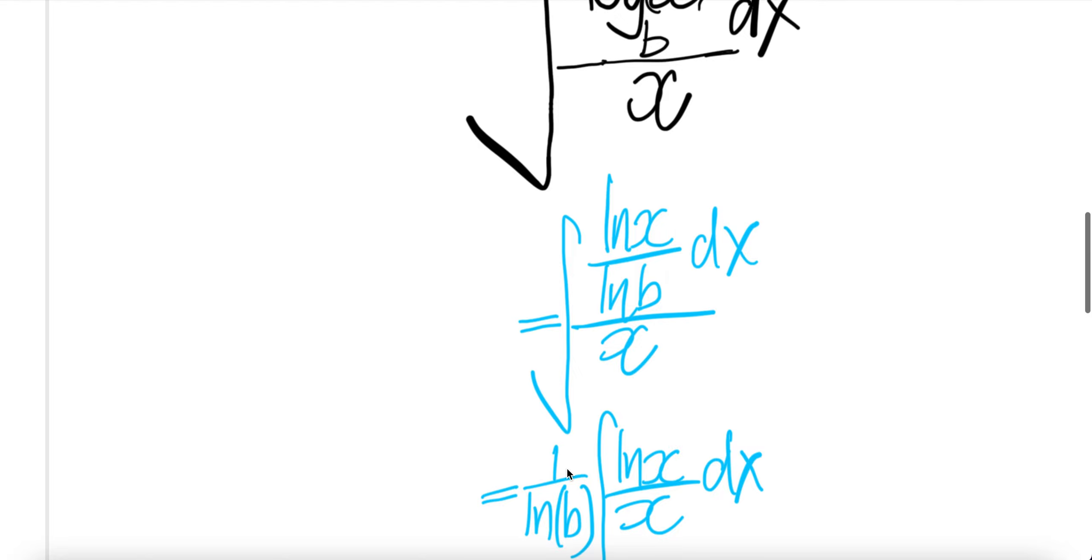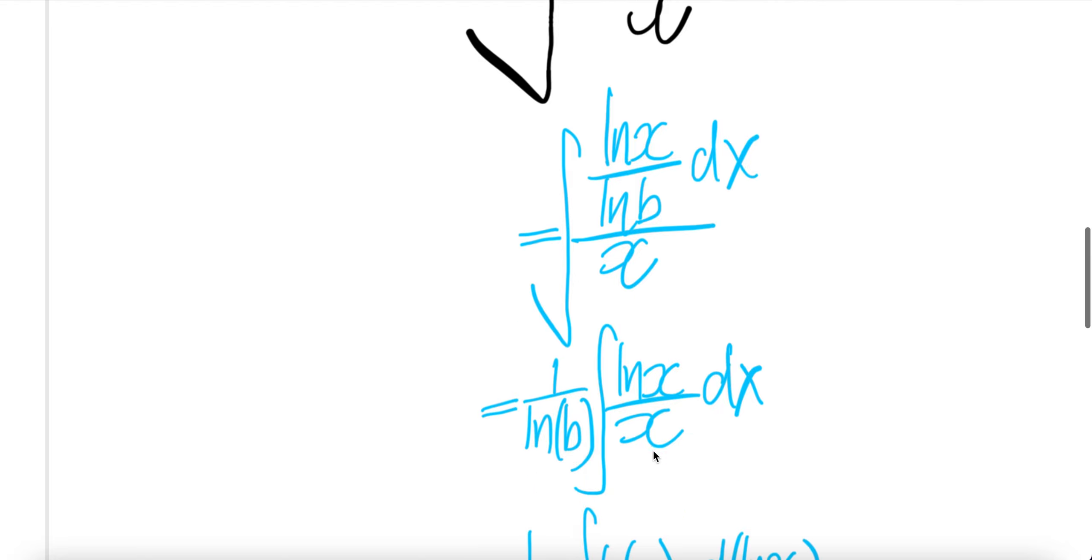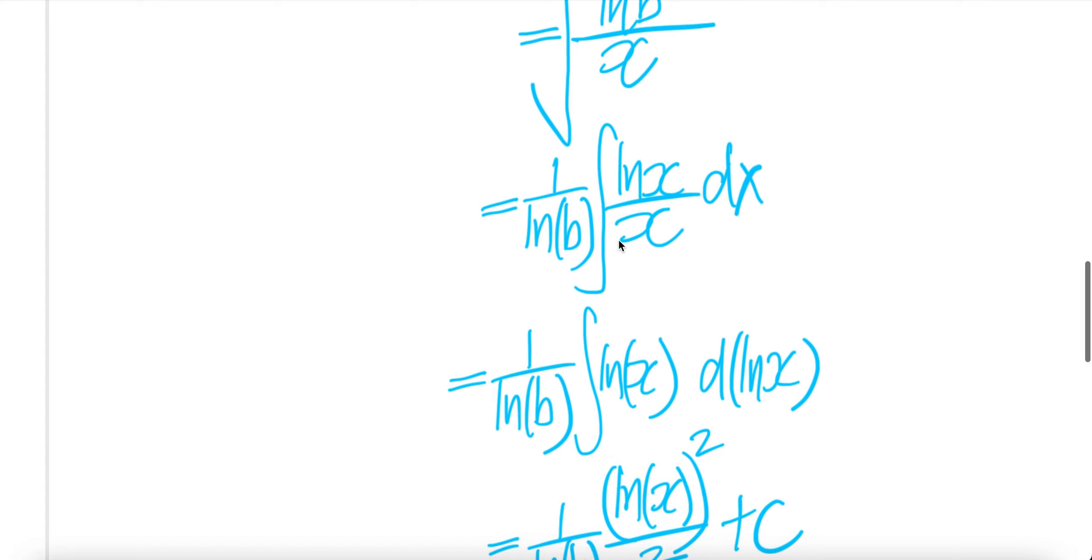1 over ln b, constant out of the integral. You get integral of ln x divided by x dx. You can push 1 over x into dx. Derivative of ln x is 1 over x dx. So this piece is equal to that.